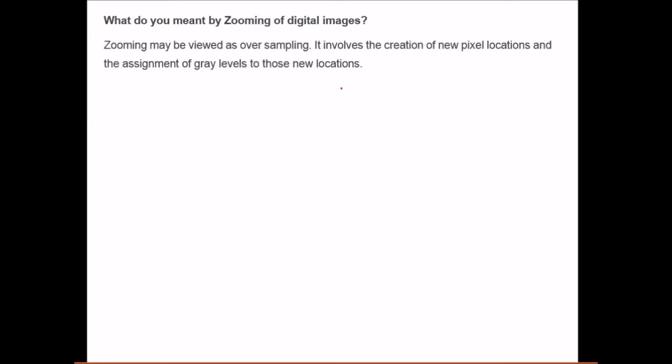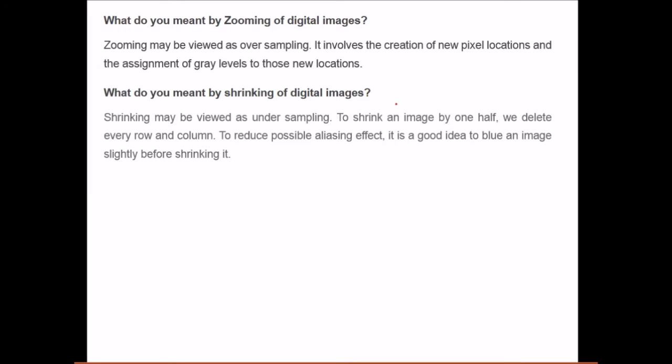Zooming of digital images may be viewed as oversampling. It involves the creation of new pixel locations and the assignment of gray levels to these new locations. Shrinking means undersampling. To shrink an image by one half, we delete every other row and column. To reduce possible aliasing effects, it is a good idea to blur the image slightly before shrinking it.